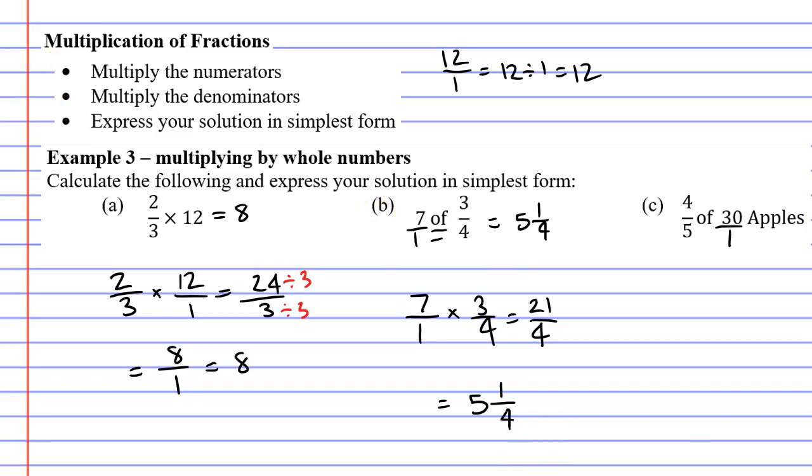Moving now on to question C. Once again we've got the word of, which just means to multiply. So we're going 4 over 5 times 30, or times 30 over 1.